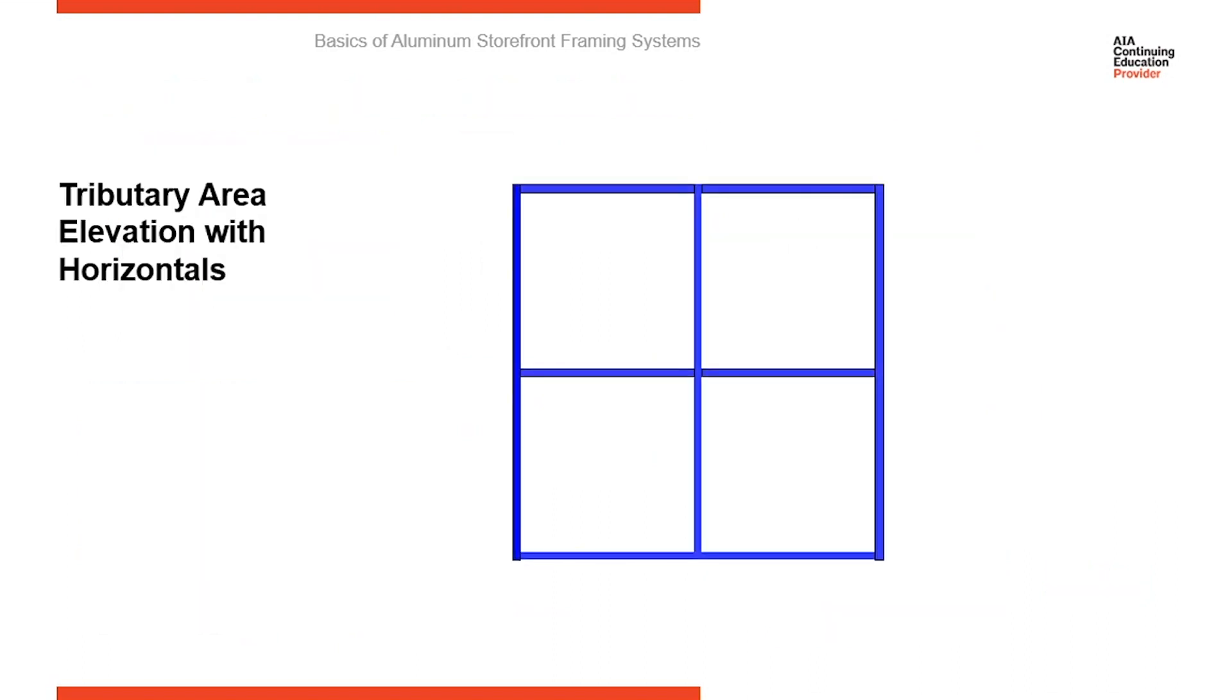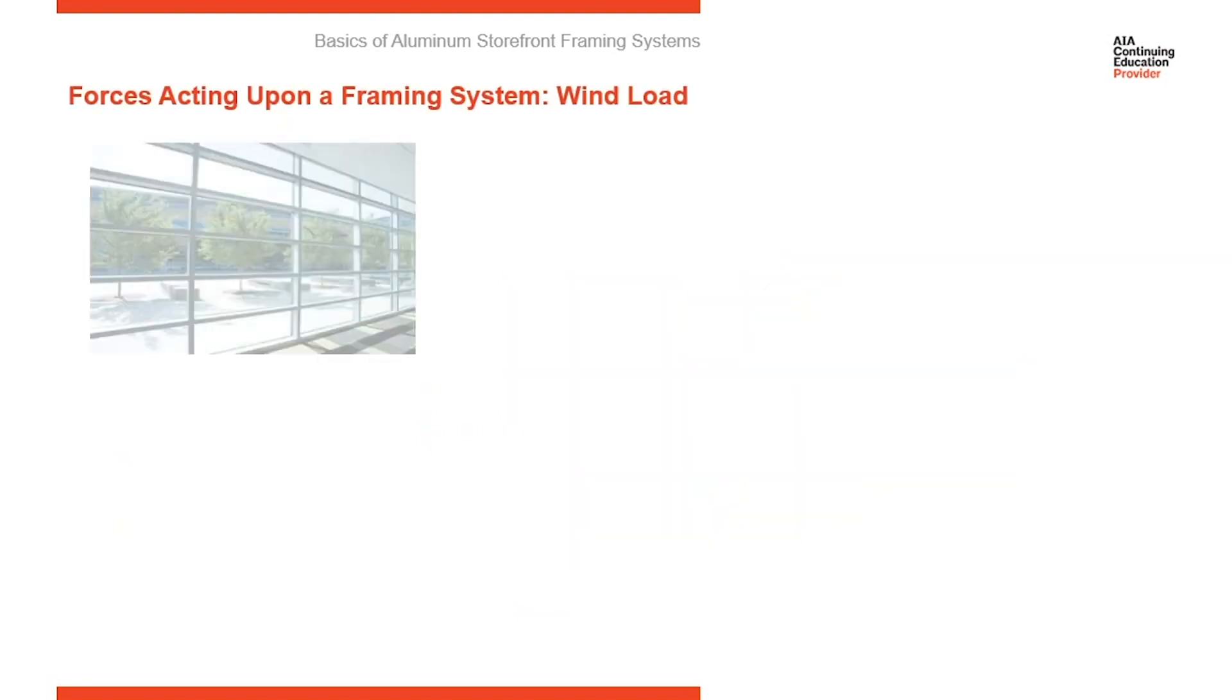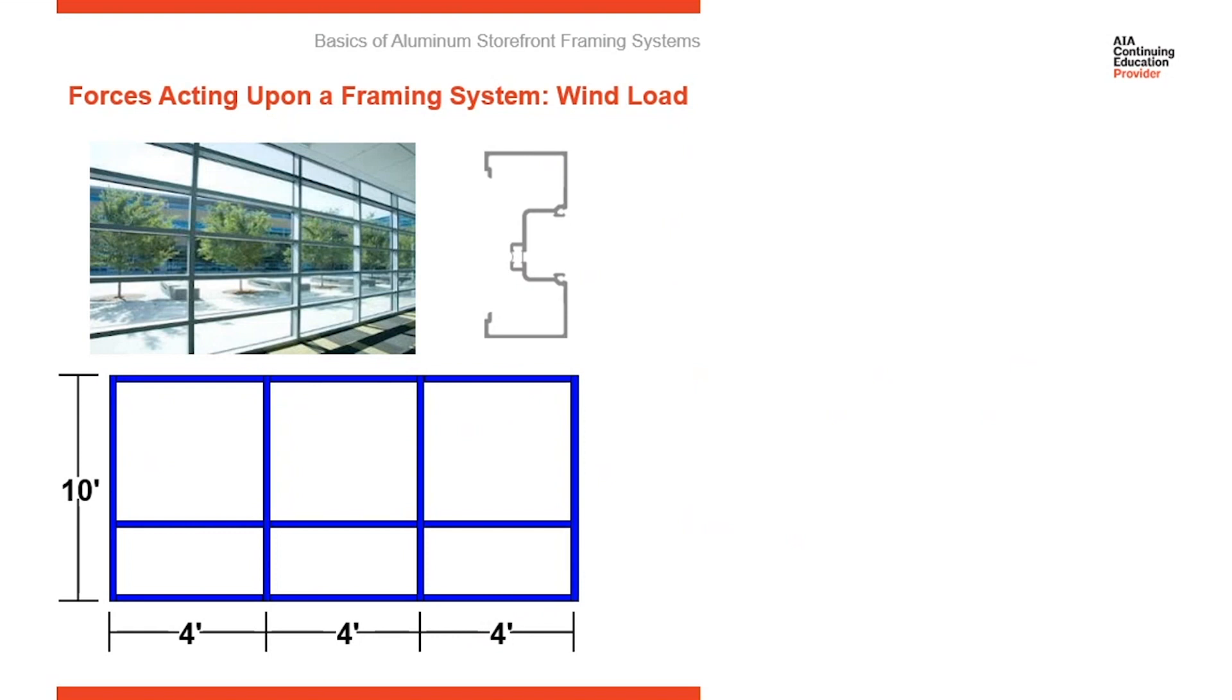So let's go back to that elevation we're looking at, 10 by 10. We introduced an intermediate vertical. Now let's introduce a horizontal to the elevation. Now instead of two lights of glass, we have four lights of glass. So when the wind hits those lights of glass, they start to deflect. Then they transfer their load to the frames all the way around them. Now the tributary area here has changed. It's more of this diamond pattern. And worse yet, it's got a focal point here where all the load is concentrated where the horizontal meets the vertical member.